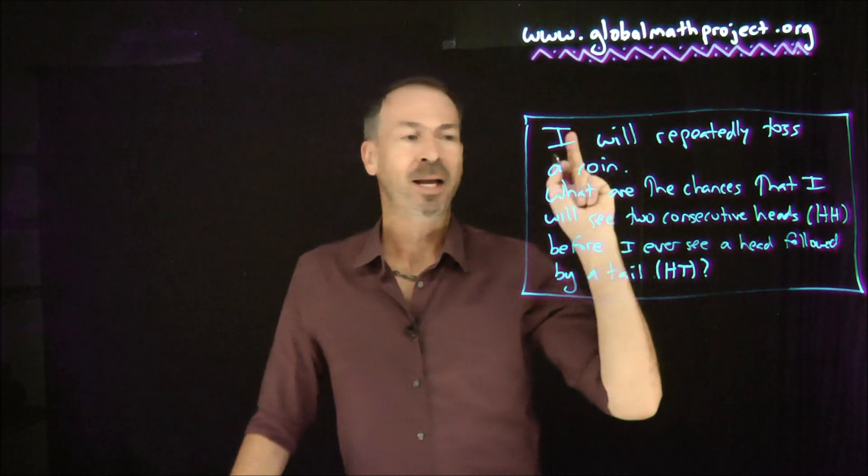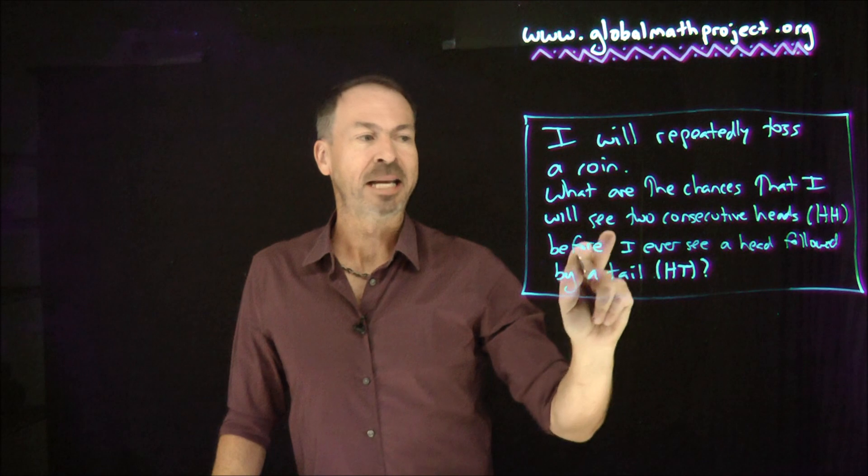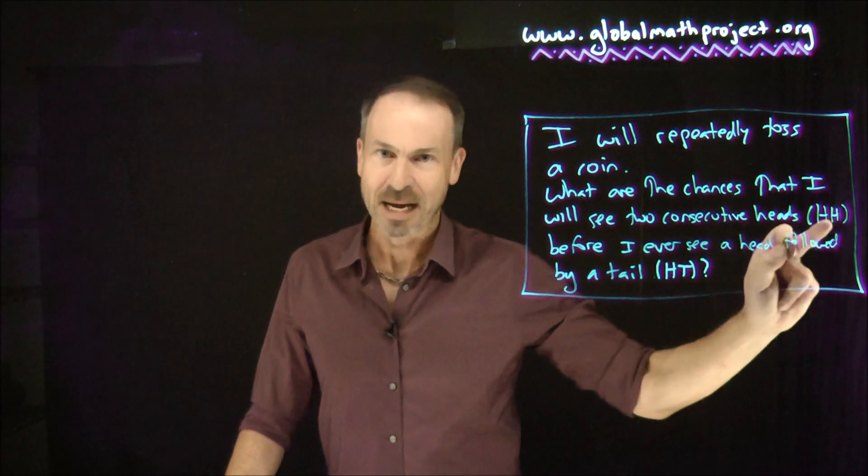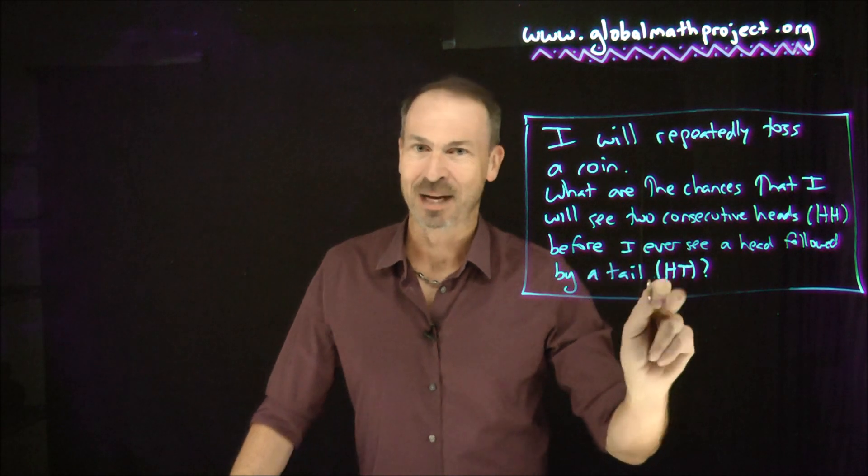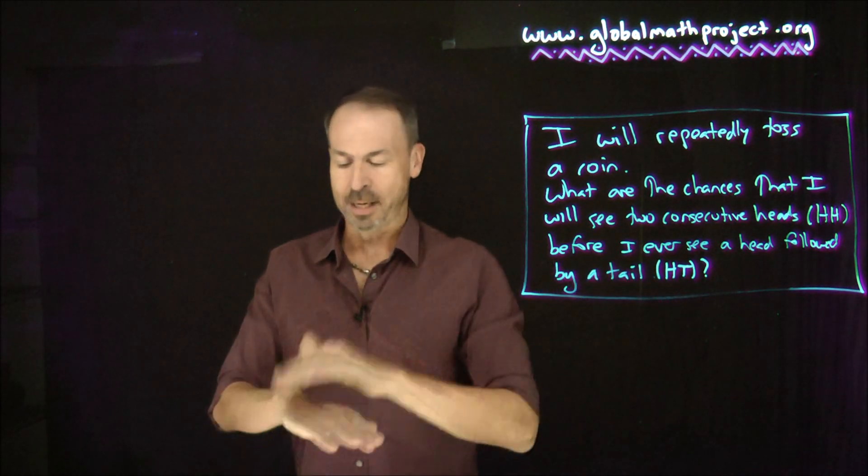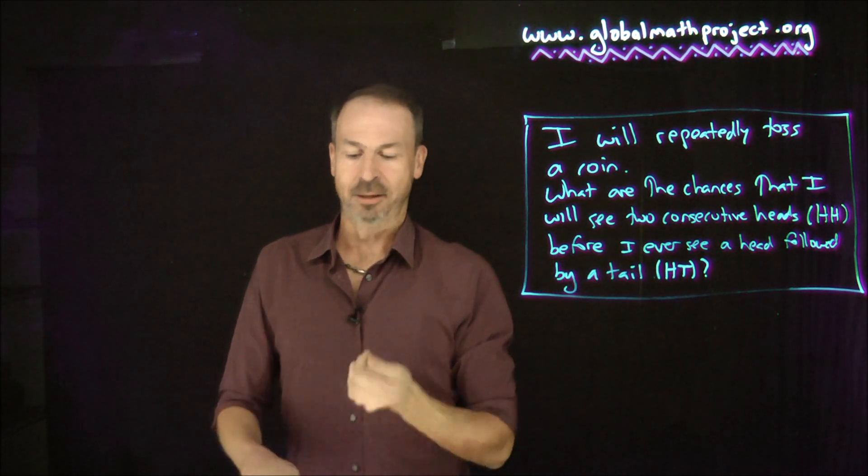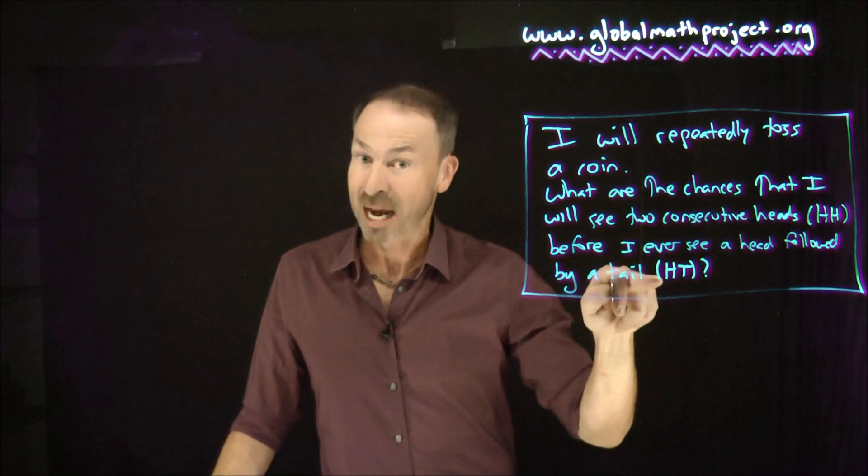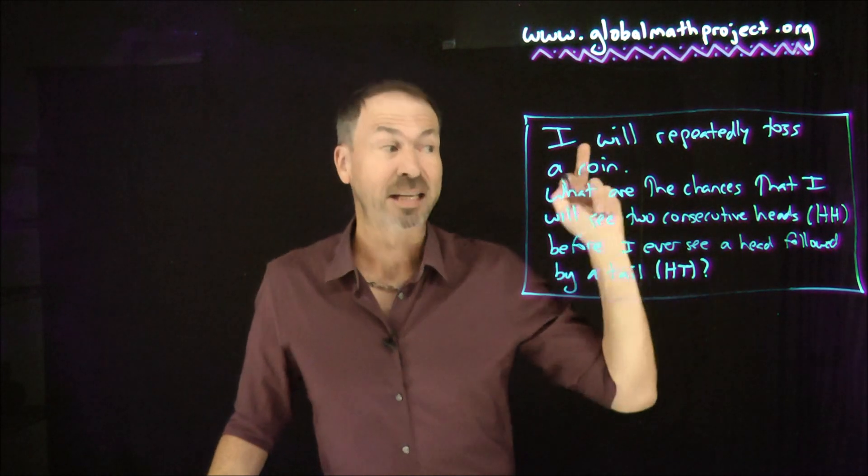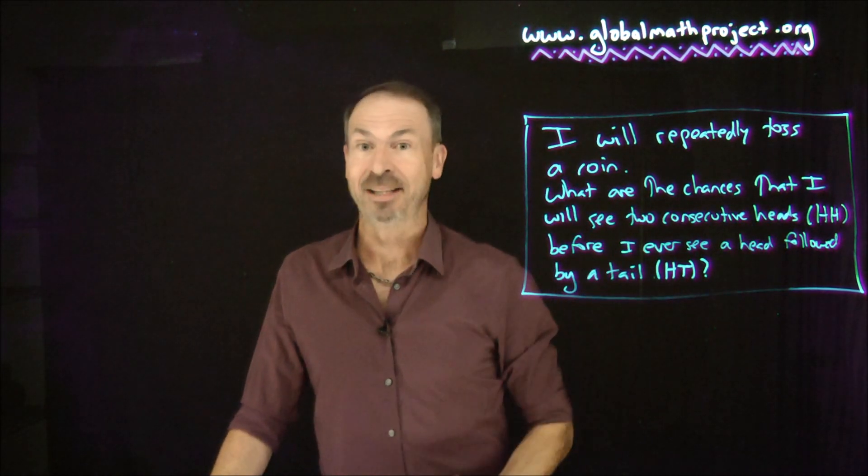The question is, I will repeatedly toss a coin. What are the chances that I will see two consecutive heads, head-head, before I ever see a head followed by a tail, head-tail? So I'm going to keep tossing this coin, notice whether I get heads or tails, and eventually I'll either see heads-heads first or heads-tails first. What are the chances I'll see heads-heads before I see heads-tails?